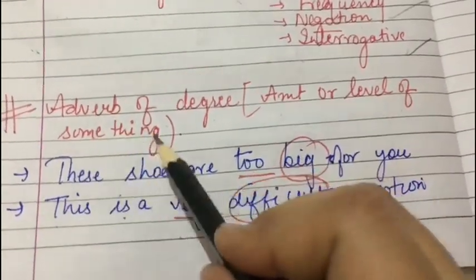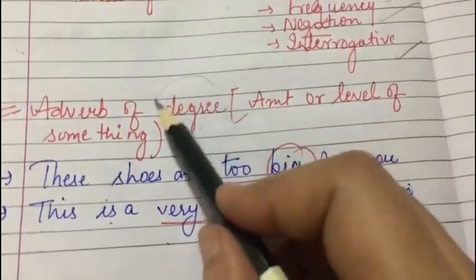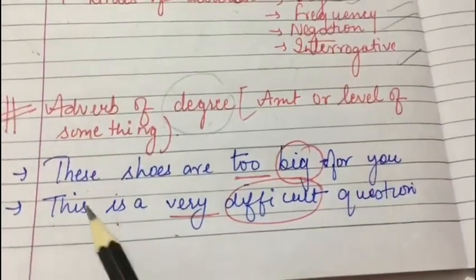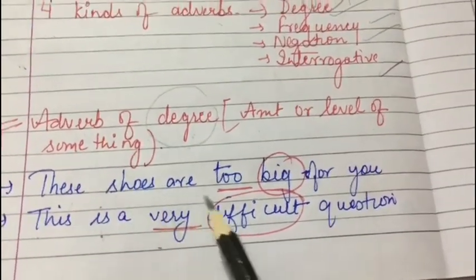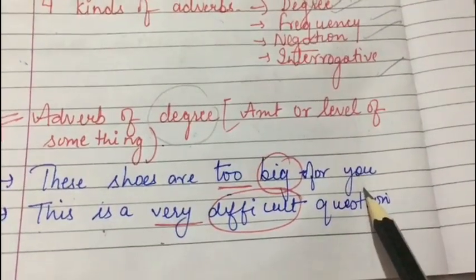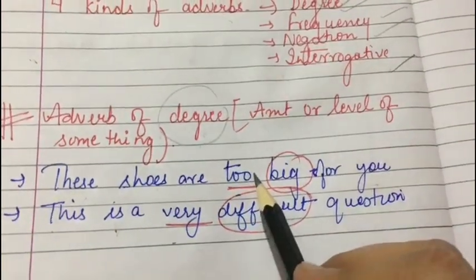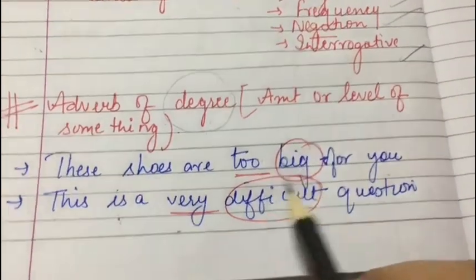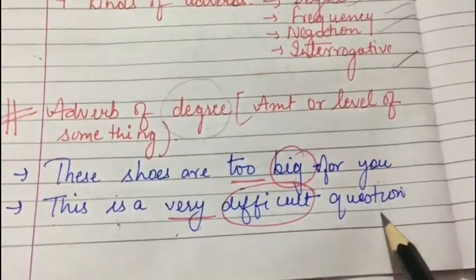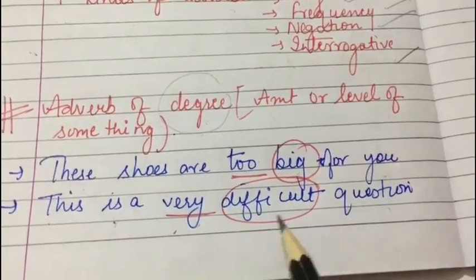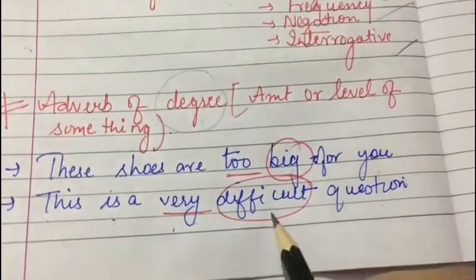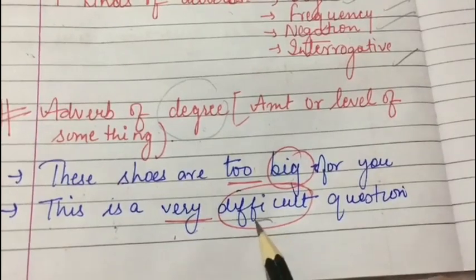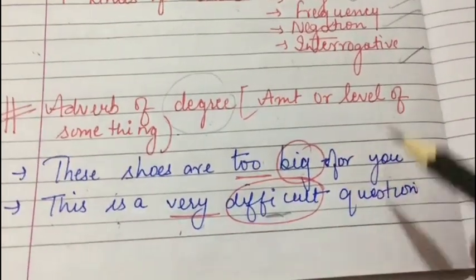First, adverb of degree. The word 'degree' refers to the amount or level of something. Looking at these examples: 'These shoes are too big for you' — here 'too' tells us how big the shoes are and qualifies the adjective 'big.' Next, 'This is a very difficult question' — here 'very' tells us the extent of the difficulty and qualifies the adjective 'difficult.'